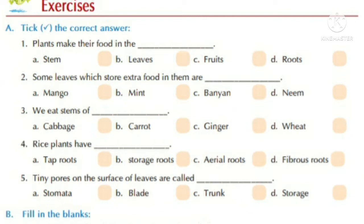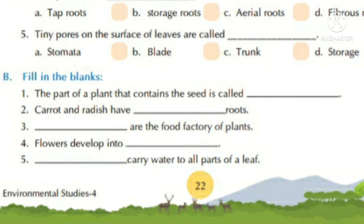Option C is correct — ginger. Number four: rice plants have tap roots, storage roots, aerial roots, or fibrous roots. The correct option is D — fibrous roots. Number five: tiny pores on the surface of leaves are called stomata, blade, trunk, or storage. The correct answer is option A — stomata.